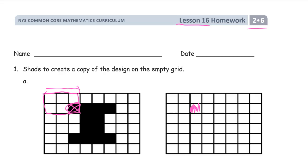Now I can just get everything — 1, 2, 3, 4 across, then 2, 3, 4 across there. From the middle, there's a row of 2 in the middle, and another row of 2 in the middle, and then another row of 4 on the bottom to make kind of like a big I.